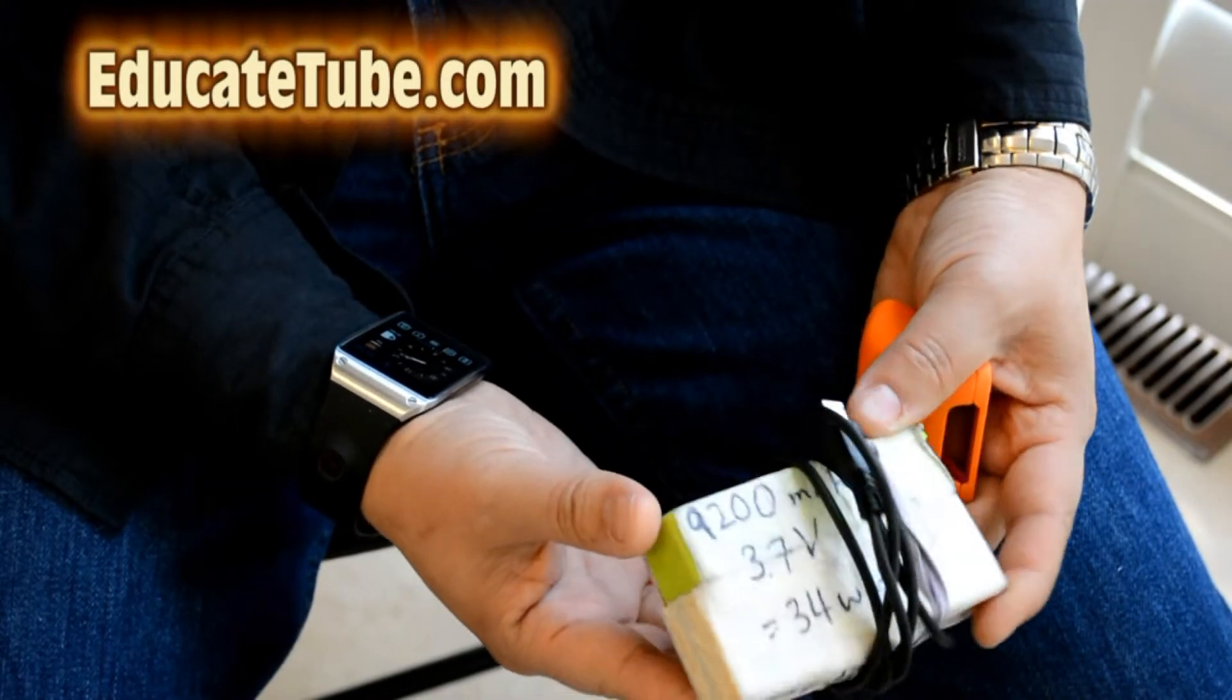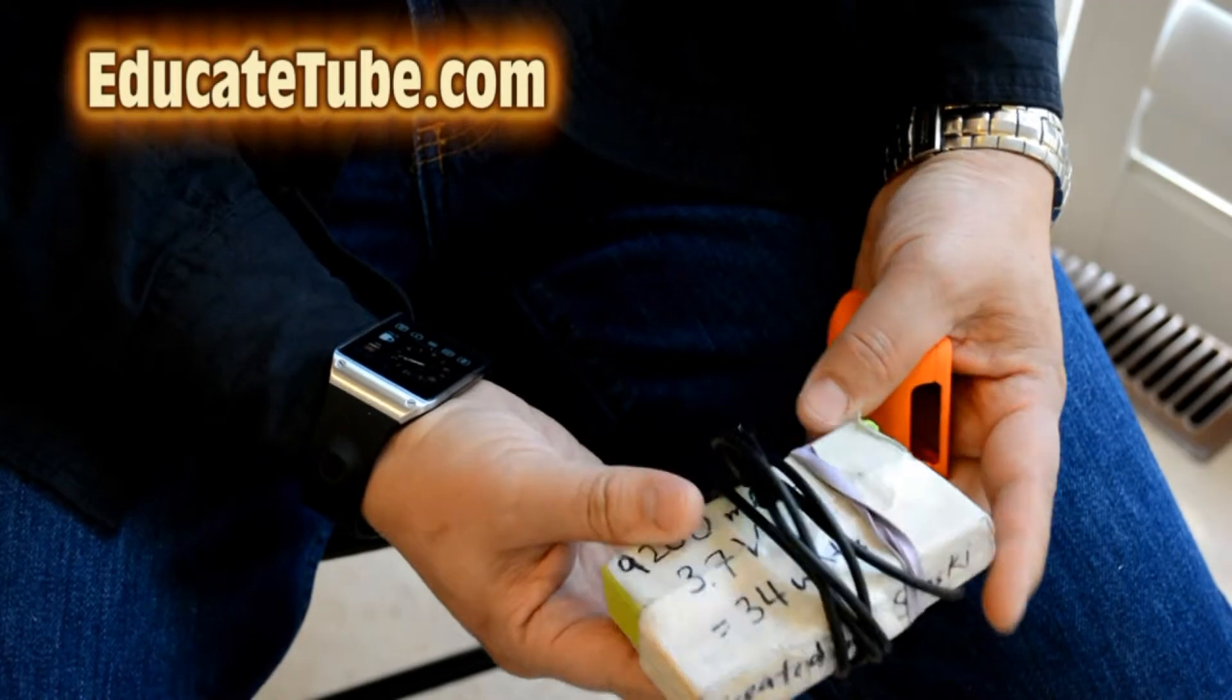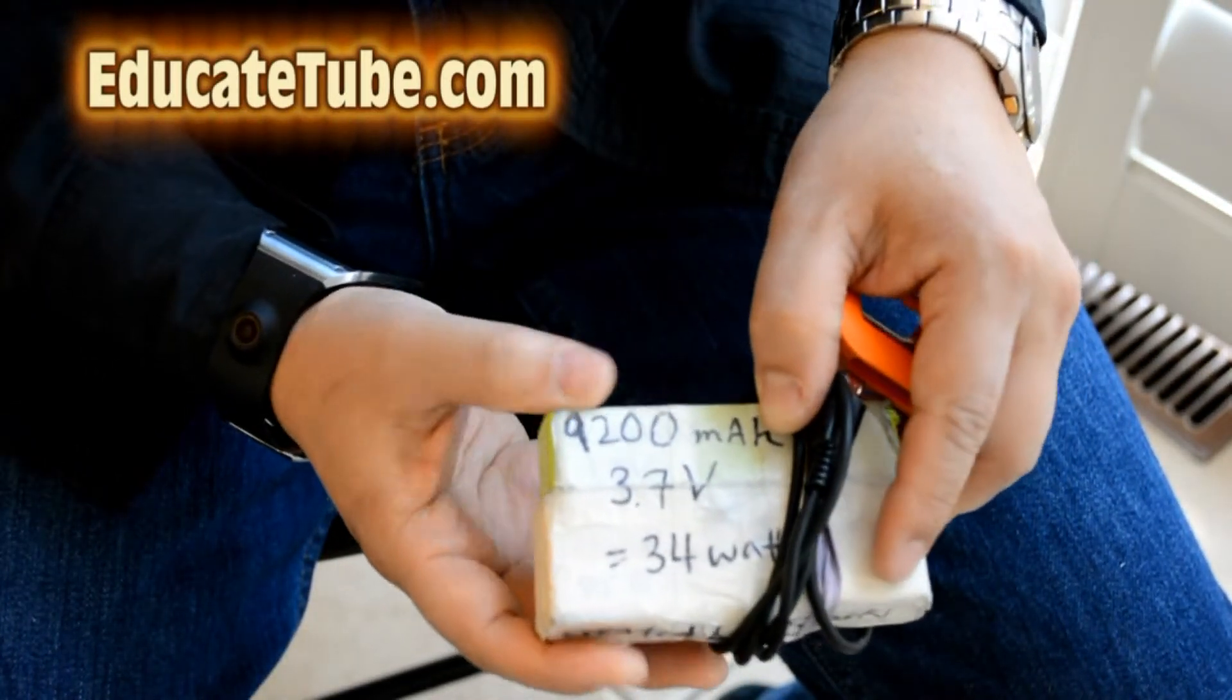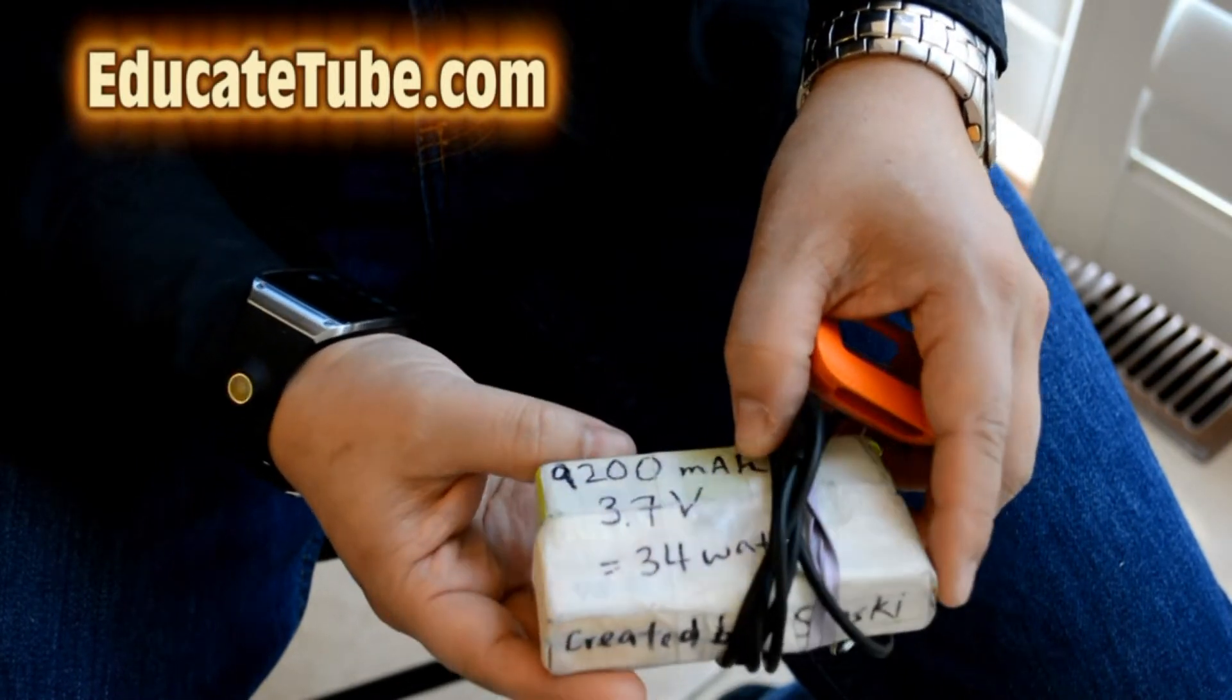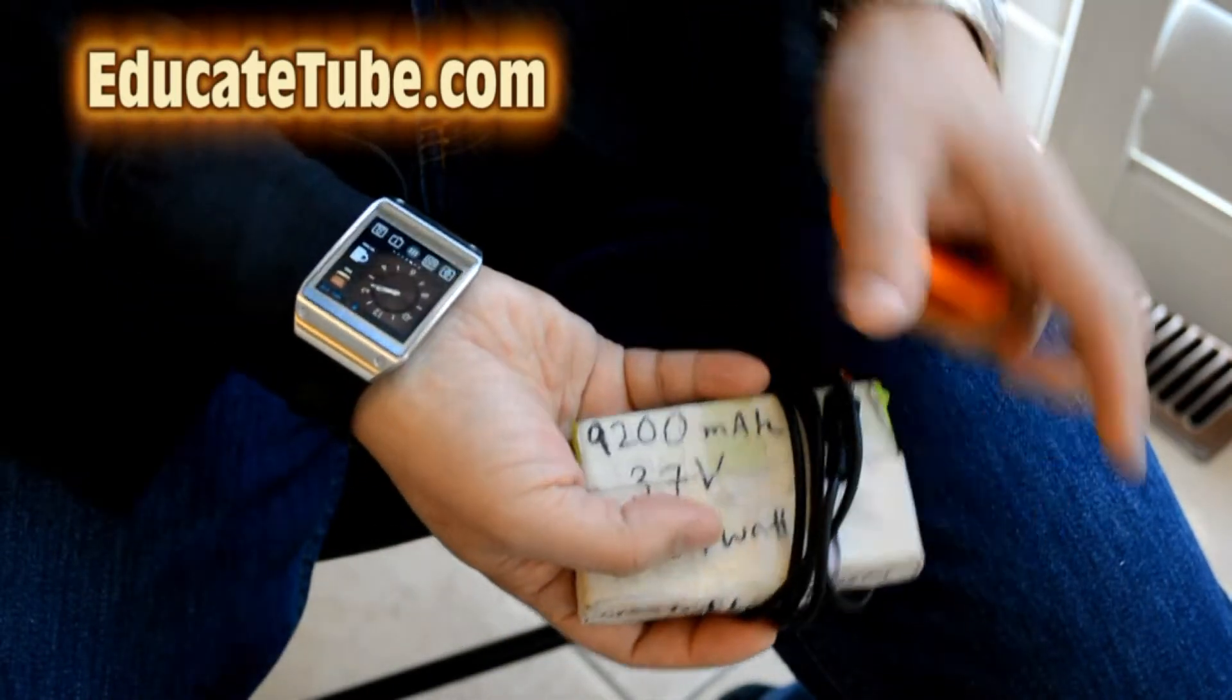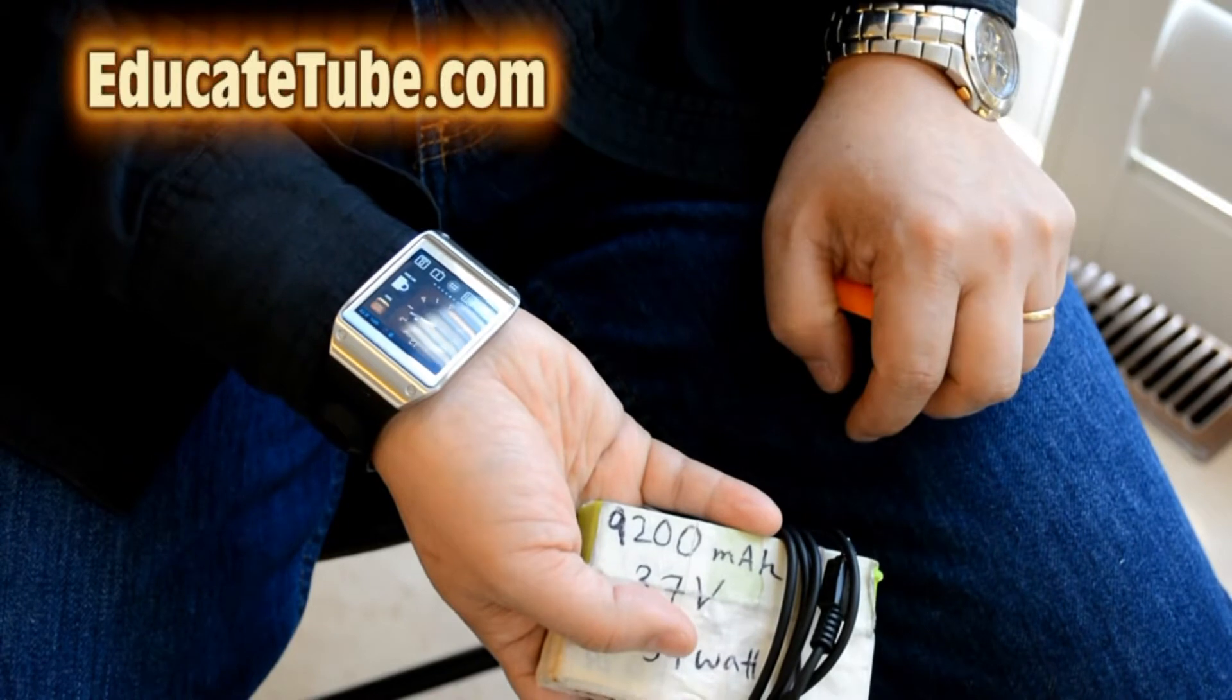Now, you can buy one yourself. It costs you between 40 to 50 bucks. But I built this one, cost me less than 15 bucks. This is actually a 9,200 milliamp hour battery, 3.7 volt. This is equivalent to about 34 watt. Now, this Samsung Gear 1 uses about a little bit of over 1 watt.